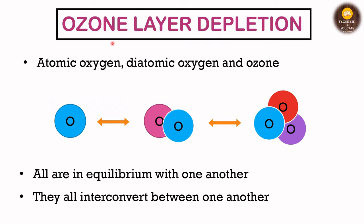The ozone layer basically contains all three forms: atomic oxygen (O), diatomic oxygen (O2), and ozone (O3). They are all in equilibrium with one another — O, O2, and O3 interconvert between each other. O2 can be converted into O and vice versa; similarly O3 is interconvertible into O2, and O2 is convertible into O3. This interconversion happens naturally in the ozone layer and is maintained by nature itself.